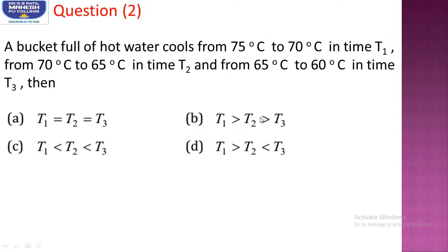Question number 2: A bucket full of hot water cools from 75°C to 70°C in time T1, from 70°C to 65°C in time T2, and from 65°C to 60°C in time T3. Which of the options is the correct one? By observing Newton's law of cooling graph itself we can tell the answer, but let us do the calculation.